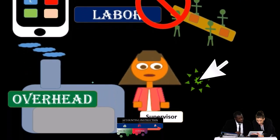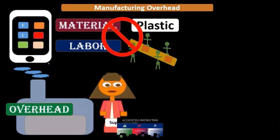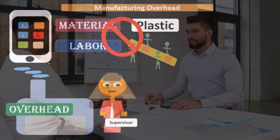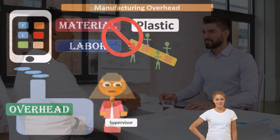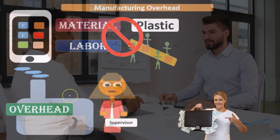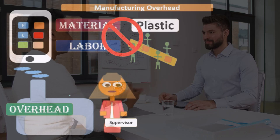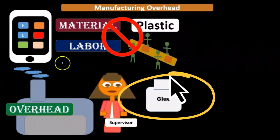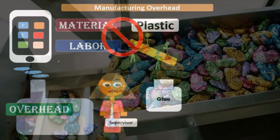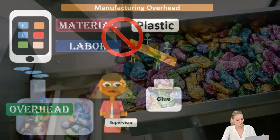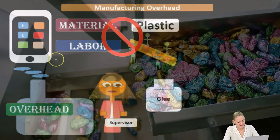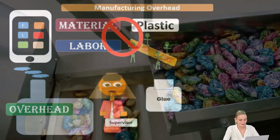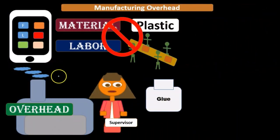For example, supervisor salary cannot be applied directly to a specific piece of inventory because the supervisor is working on all the inventory. We want to apply her wages to inventory in particular, but we can't do it directly — so we put it into this overhead bucket and then apply it out using some type of estimate. The same is true for something like glue or small materials. Glue is directly involved in production, but it's small in nature. Therefore, it may not be worth tracking the cost of each unit of glue per inventory product, so it's more cost-effective to put it in overhead and apply it out using an estimate.